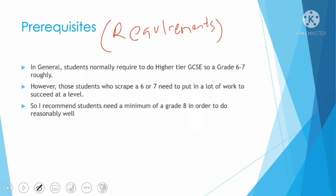I recommend students need a minimum of a grade eight in order to do reasonably well at A-level. If you've got a nine, you should have no problem getting in, but you do need to be doing the work as well. A grade eight is roughly a low D at A-level — we convert from the number system into the letter grade system, so your A*, A, B all the way down to D's. So just be careful: a low D is your grade eight, so a six or seven is even lower — put that into context.